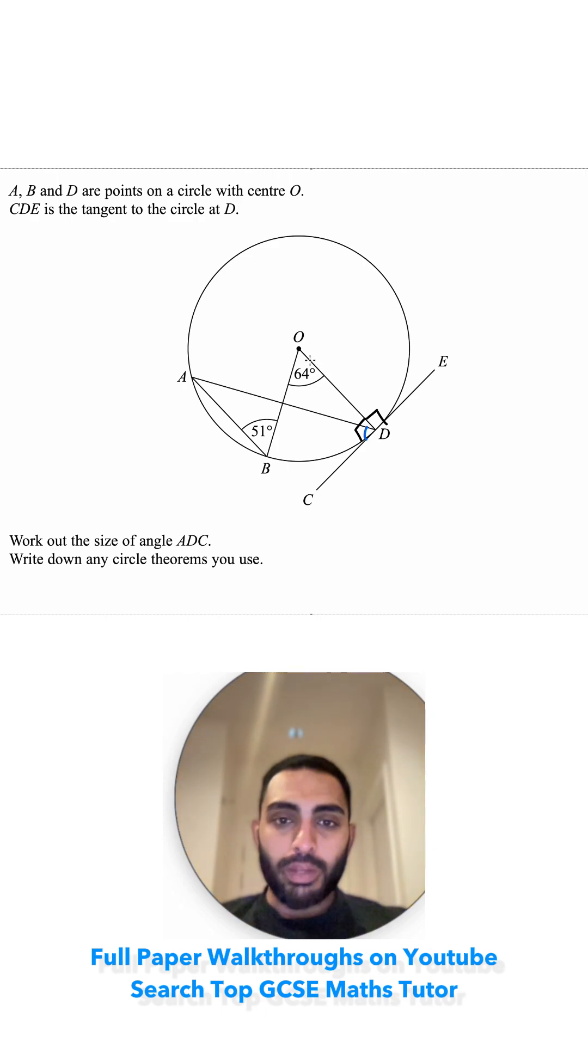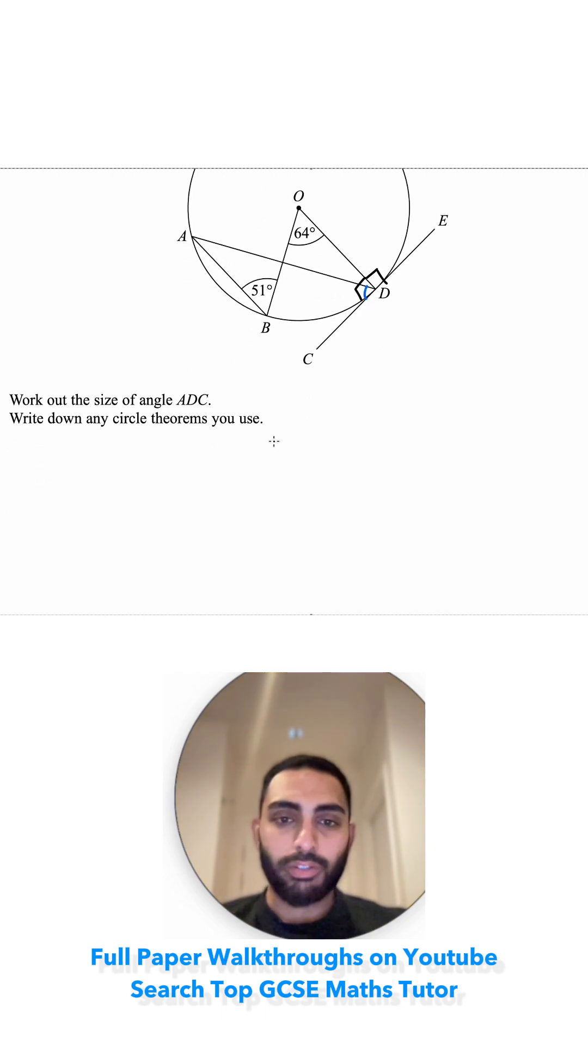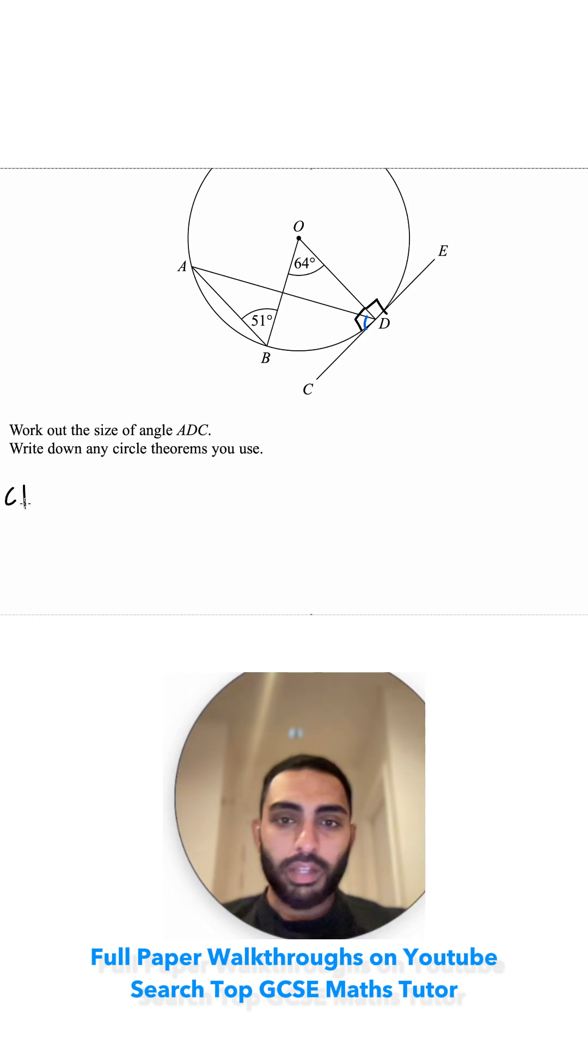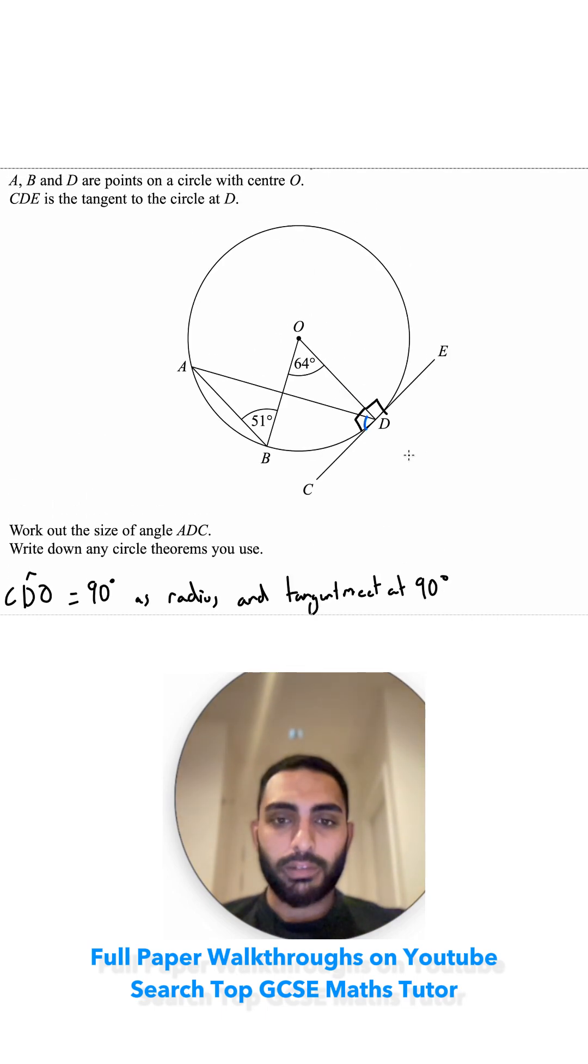So the first circle theorem that we've used is the radius and a tangent meet at 90 degrees. So I can write CDO, C to D to O equals 90 degrees as radius and tangent meet at 90 degrees. That's that first one done.